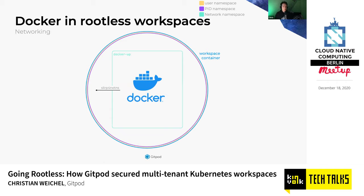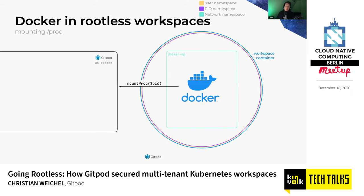The key problem for making Docker work is networking. Docker assumes fairly widespread abilities with regards to networking — for example, creating their own devices, modifying iptables, etc. So we wrap Docker inside its own network namespace. Creating network namespaces can be done without many privileges, but you need some way for anything running within that namespace to talk to the outside world. Slirp4netns is one approach with the best availability trade-offs because it doesn't need newer kernel features — though it is a userland process, so there's some performance penalty.